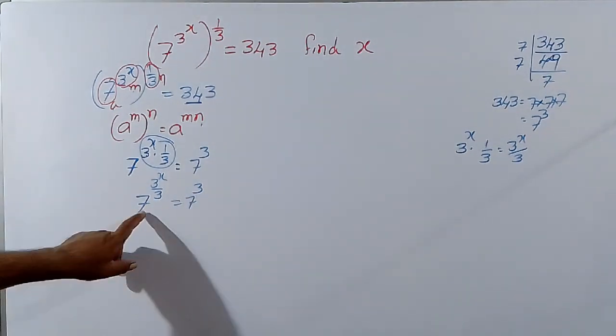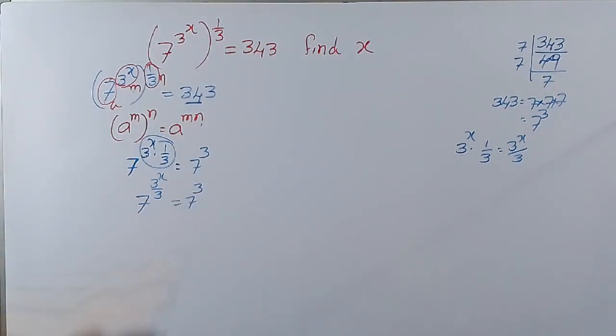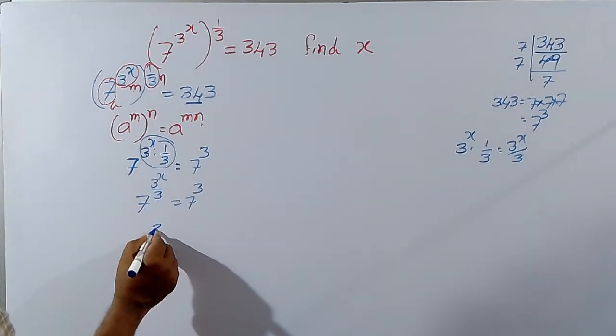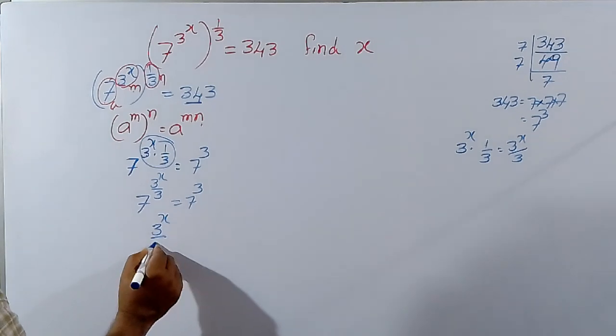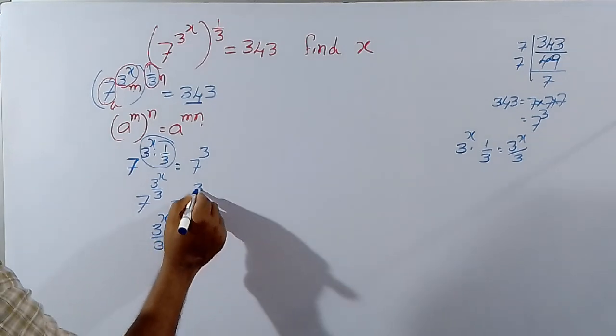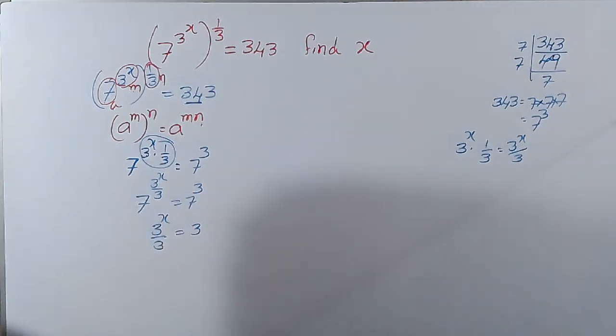Now the bases are equal, then exponents are equal. So what is the exponent here? 3 power x by 3 equal to here exponent is 3.